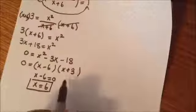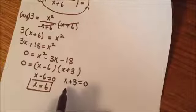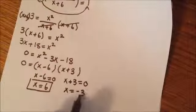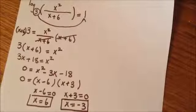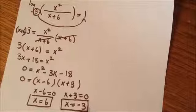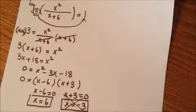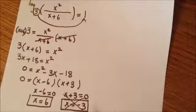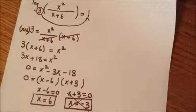Remember, whenever we're dealing with logarithmic equations, we always have to check for extraneous solutions. Here we have negative 3, and we cannot take a log of a negative number, so this is going to be considered our extraneous solution. The only solution to this problem would be x equals positive 6.